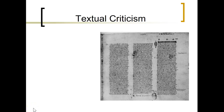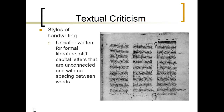We're going to continue looking at some aspects of textual criticism. We'll first look at something about the styles of handwriting used by scribes. Basically, we divide up the styles under two large categories. One is what's called the uncial, and the uncial style is primarily written for formal literature, so we have stiff capital letters.